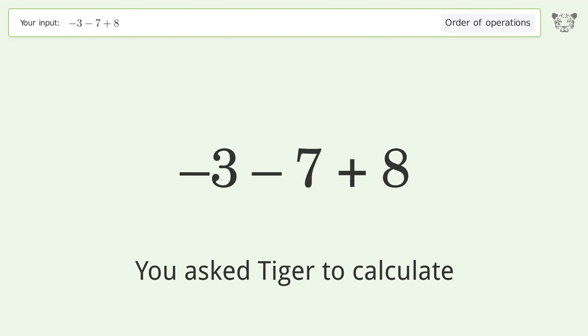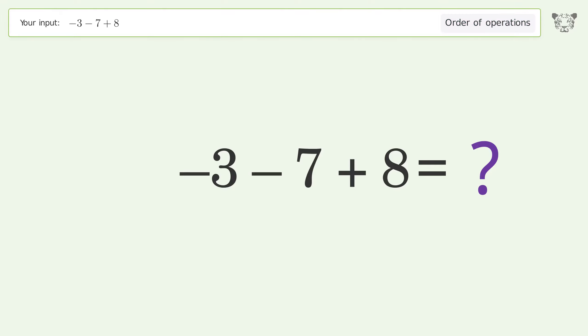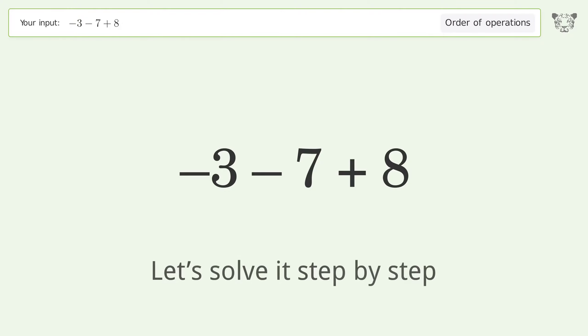You asked Tiger to calculate. This deals with the order of operations. The final result is negative 2. Let's solve it step by step.